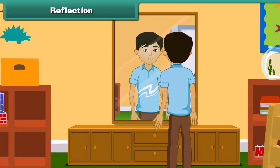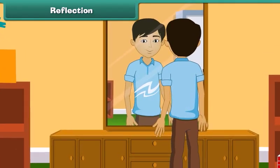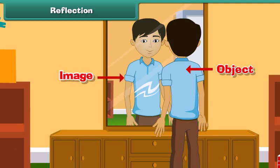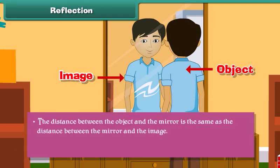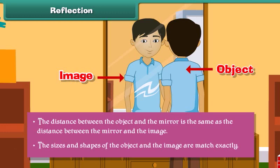When you position yourself in front of a mirror, what you see is your reflection. You are the object and the reflection is the image. Here are some interesting facts about reflections: the distance between the object and the mirror is the same as the distance between the mirror and the image, and the sizes and shapes of the object and the image match exactly.